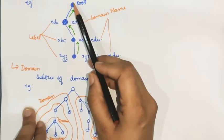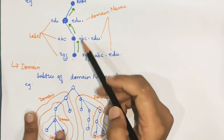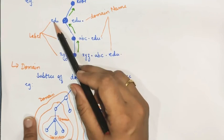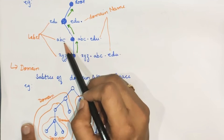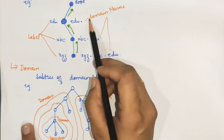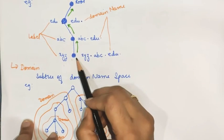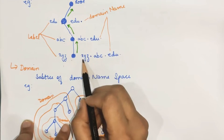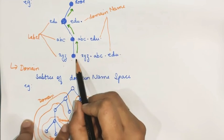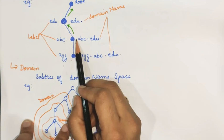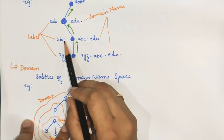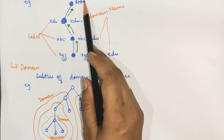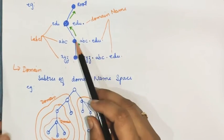Here is an example showing a tree structure with a root. Each and every node has been given some label — for example: edu, abc, xyz. xyz is a label. The domain name is provided starting from the bottom, with labels separated by dots. So for xyz, the domain name would be xyz.abc.edu. For the abc node, it would be abc.edu. For edu, it would simply be edu, since the root node is a null node. This is how we define labels and domain names.